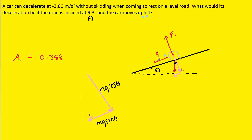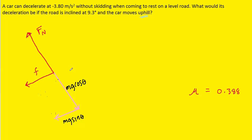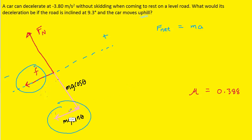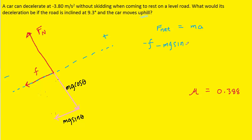In the enlarged free body diagram we add the frictional force pointing down the ramp and the normal force perpendicular to the ramp. Applying Newton's second law in the x direction — defined as along the ramp — calling up-ramp positive: the net force equals mass times acceleration. Both the frictional force and the mg sine theta component point down the ramp, so we write negative F minus mg sine theta equals ma. The frictional force can be replaced with the coefficient of friction times the normal force.